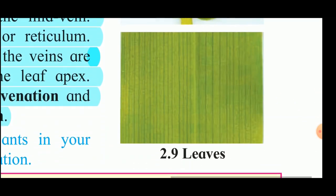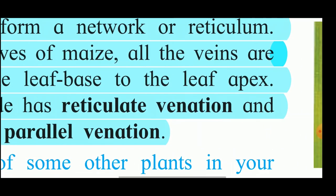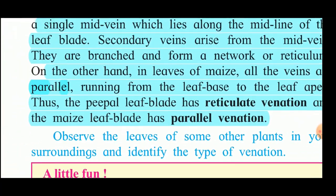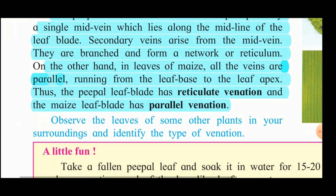The next type of venation - in this case we see that the veins are parallel to each other. Such type of venation is called parallel venation. This is found in monocotyledonous plants. Examples of monocotyledonous plants are maize, sugarcane, jowar, and rice. These plants all have monocotyledonous seeds and parallel venation.